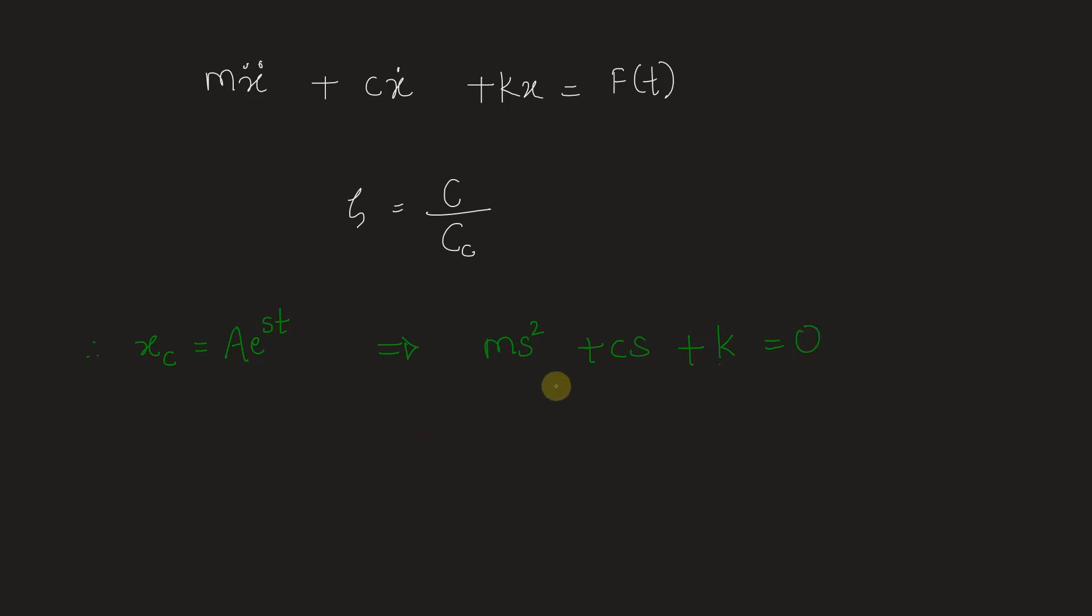In order to solve this quadratic equation, let us use the quadratic formula. Hence the solution s is given as [-c ± √(c² - 4km)] / 2m.